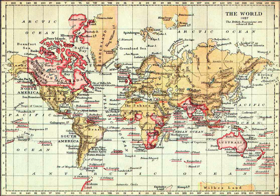Dominions were semi-independent polities under the British Crown, constituting the British Empire, beginning with Canadian Confederation in 1867. They included Canada, Australia, New Zealand, Newfoundland, South Africa, and the Irish Free State, and then from the late 1940s also India, Pakistan, and Ceylon.